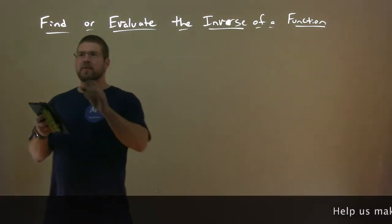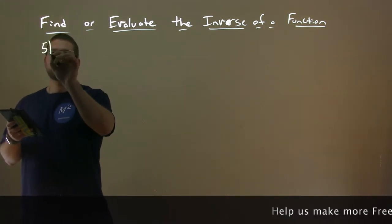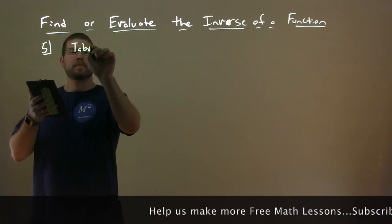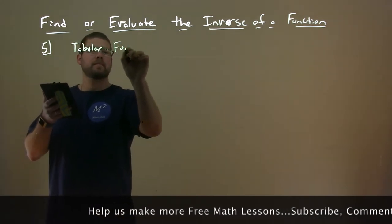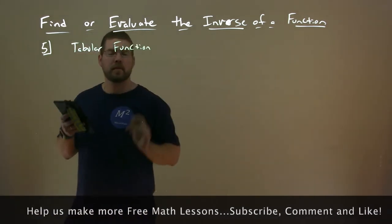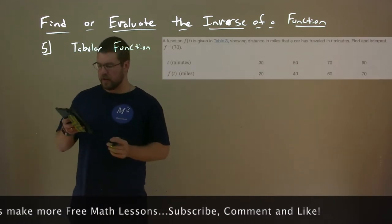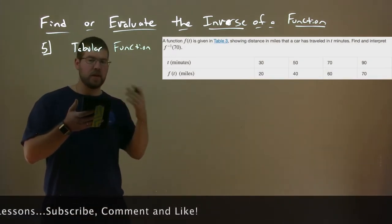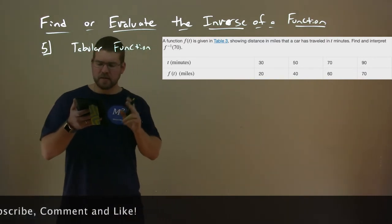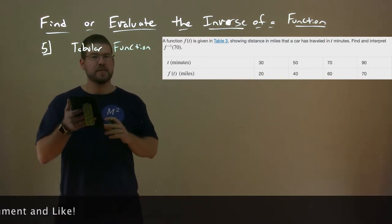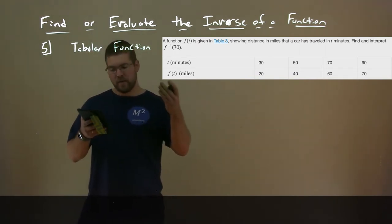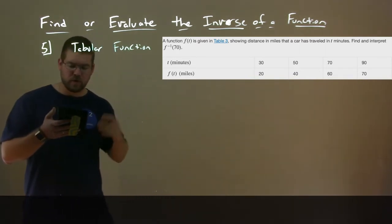We're going to start here with a table. This is a tabular function. Notice this table here. A function f(t) is given in our table, showing distance in miles that a car has traveled in t minutes. Find and interpret what f inverse of 70 is. So notice our table here.